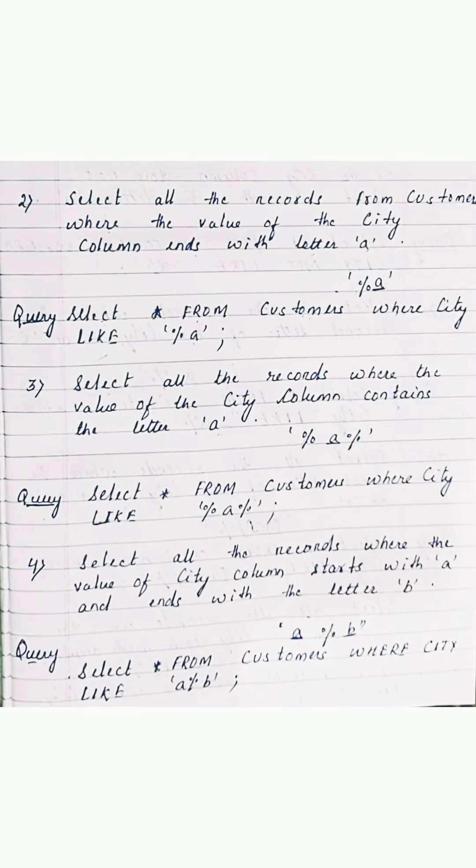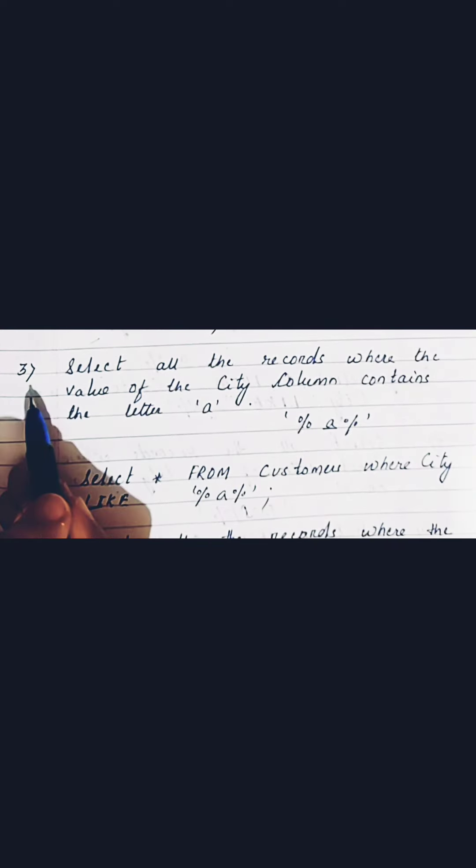Moving ahead to the second question: select all the records from the customer table where the value of the city column ends with the letter 'A'. The end letter is 'A' and before it any number of unknown letters can appear, so we use the percent sign before 'A'. The query is: SELECT * FROM customers WHERE city LIKE '%A'.